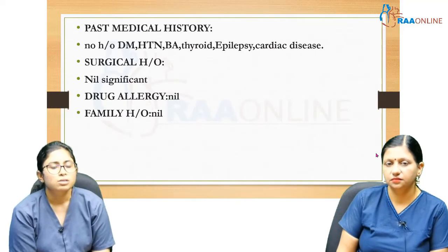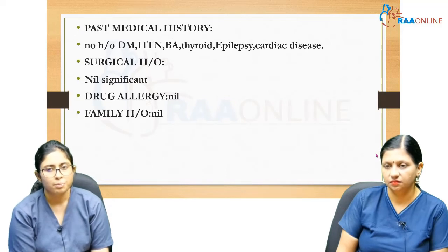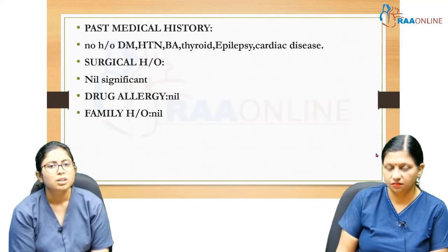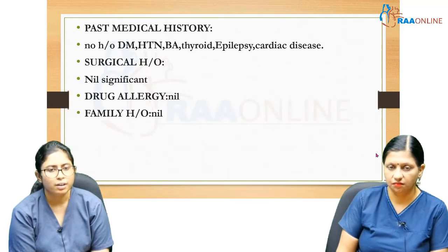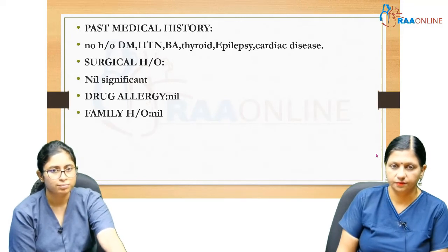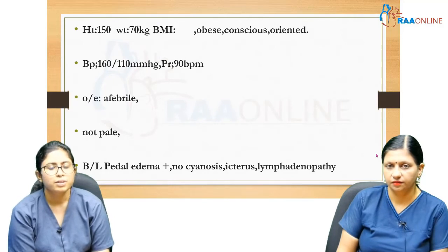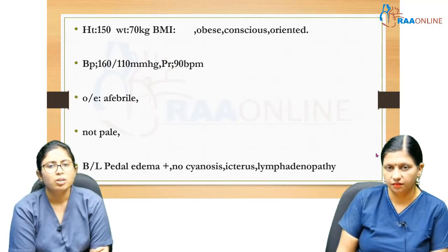Past medical history: no history of diabetes, hypertension, bronchial asthma, thyroid disorder, epilepsy, or cardiac disease. No surgeries done, no drug allergy. Family history: no history of diabetes or hypertension. On examination, the patient is obese, conscious, and oriented. Height 150 cm, weight 70 kg, BMI 30.